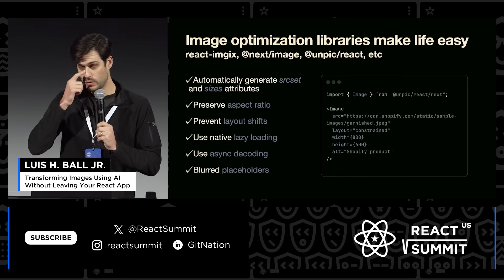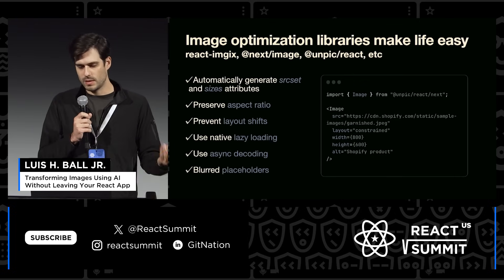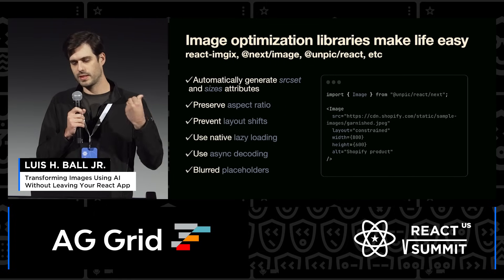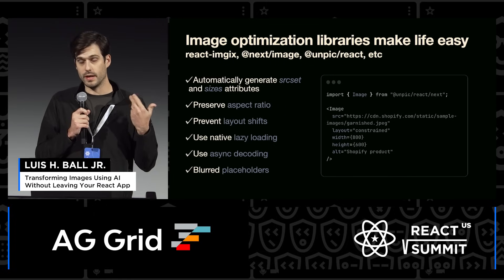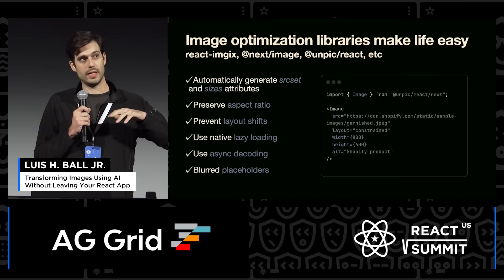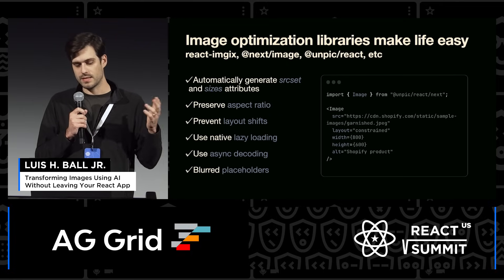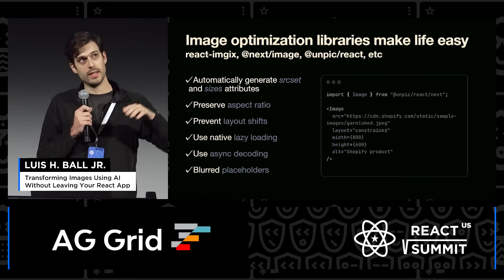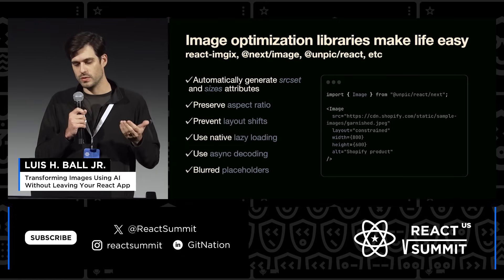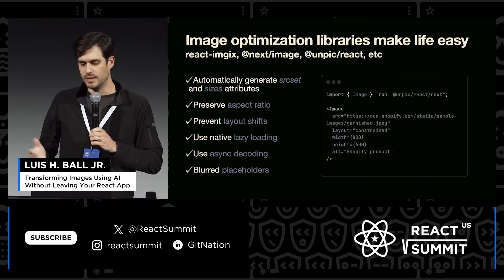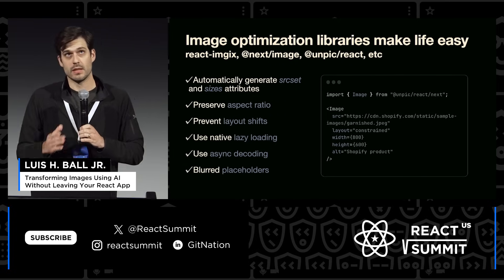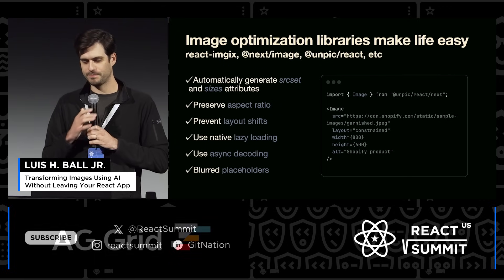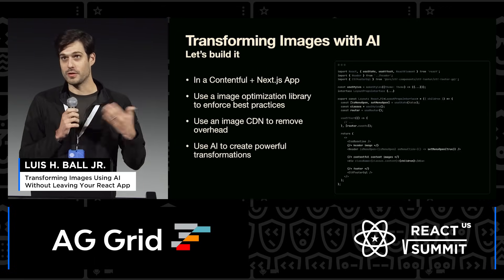Which is why people gravitate to image CDNs. With an image CDN, you can take care of all that heavy lifting. And then you can progressively adopt it using something like Unpic Image, which will take care of hitting all these best practices for you. It's fantastic because it's zero config with most of the big CDNs out there. You just drop your image URL that lives in the CDN, it knows what to do — give it a width and height if you need it, and that's pretty much it. You don't need to reinvent the wheel to achieve best practices.